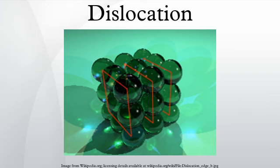In material science, a dislocation is a crystallographic defect, or irregularity, within a crystal structure.